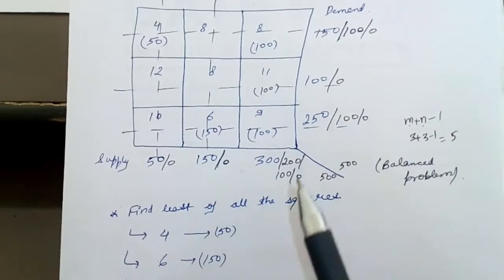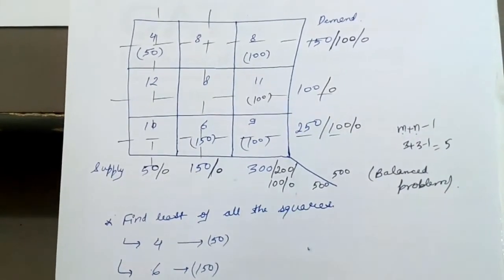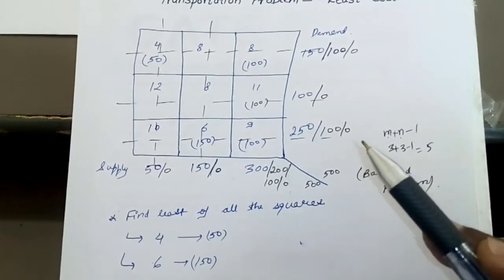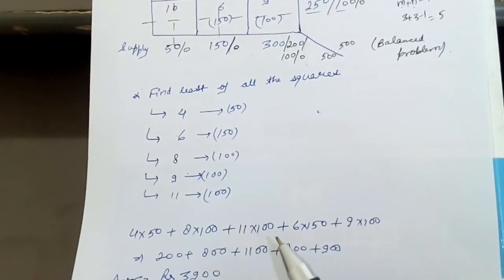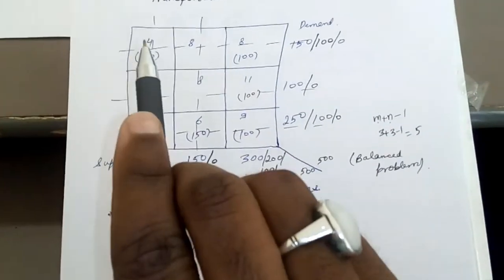Now we calculate the total cost. That is 4 into 50 plus 8 into 100 plus 11 into 100 plus 6 into 150 plus 9 into 100. So you add and the answer comes out to be 3900 rupees.